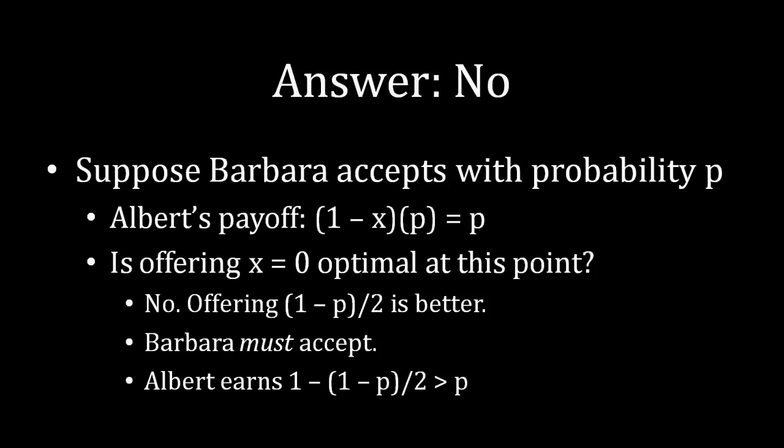And in that case, if Barbara is accepting with certainty, then Albert receives the remainder, which is 1 minus the offer size, which is 1 minus p divided by 2. And if you do a little bit of algebraic manipulation on your own, you will see that 1 minus 1 minus p divided by 2 is strictly greater than p. So that means that if Barbara were to be rejecting with positive probability and is no longer accepting with certainty when Albert offers her nothing, there is no optimal offer for Albert under those circumstances.